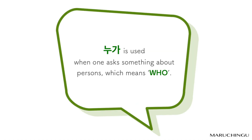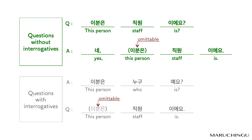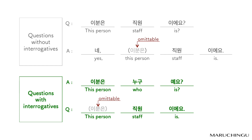누구 is used when one asks about persons, which means 'who.' Questions without interrogatives: 이분은 직원이에요? — 네, 직원이에요. 이분은 can be omitted. Questions with interrogatives: 이분은 누구예요? — 직원이에요.